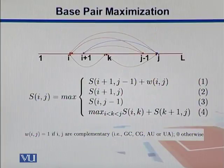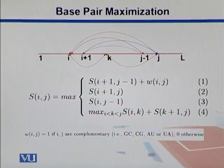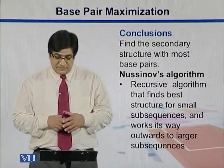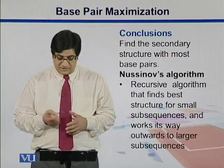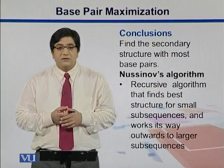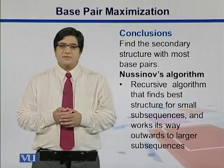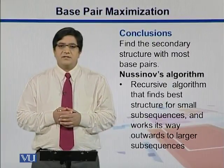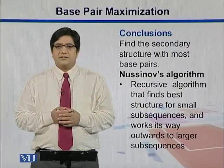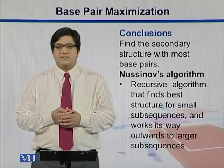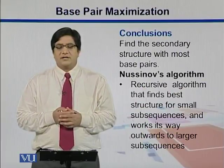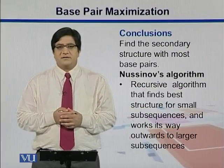This is how we look at this algorithm in more detail. The idea in base pair maximization is to find a structure where we have the maximum number of bases paired with one another. This has been implemented as a dynamic programming algorithm, known as the Nussinov algorithm.